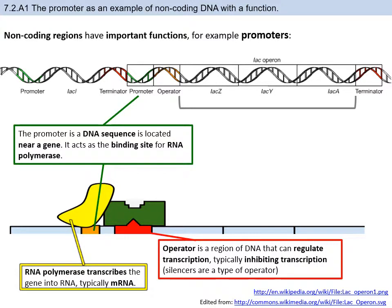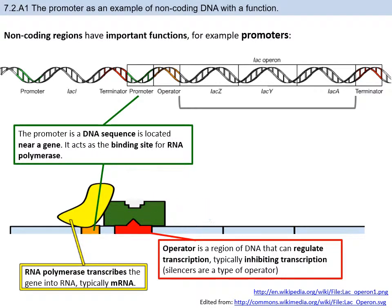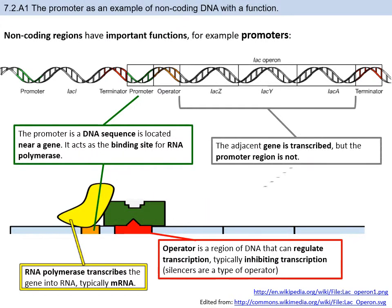RNA polymerase could bind to the promoter, but because of the inhibitor bound to the operator located underneath it, it cannot move forward. It's impossible for RNA polymerase to go forward along the DNA because there's a physical protein in the way. If it gets past the operator, it would be going on to the operon. Sections of genes used in bacteria are referred to as operons.